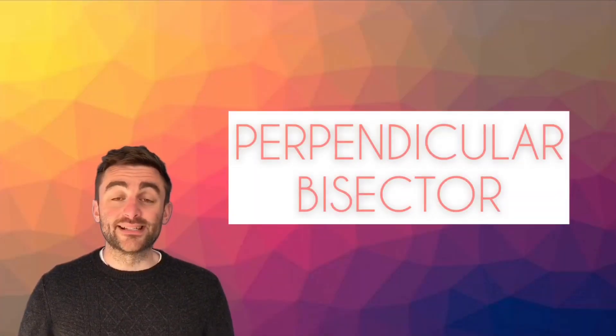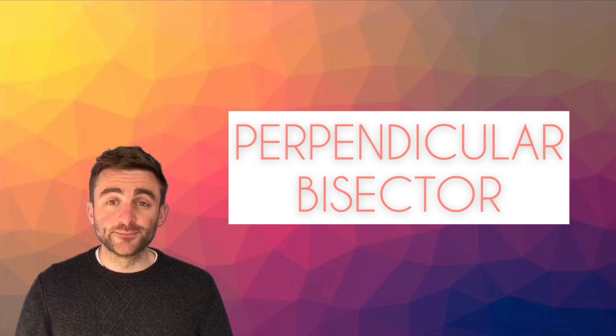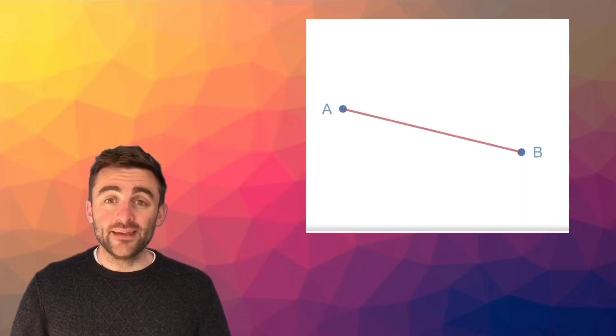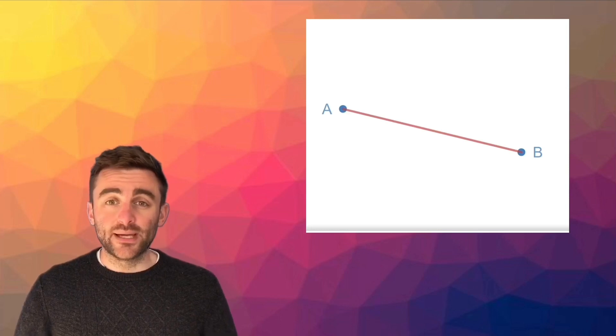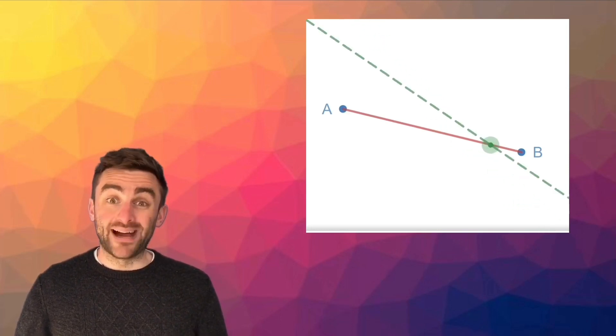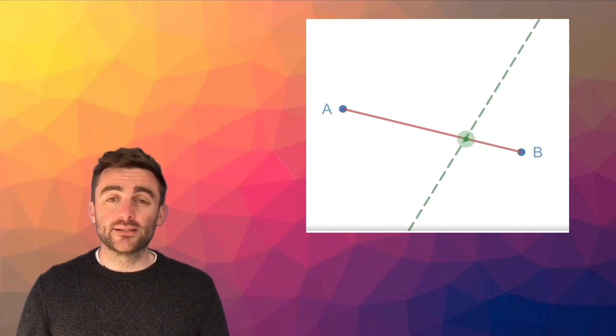A perpendicular bisector does exactly what its name suggests. If we have a line segment AB, then the perpendicular bisector of AB is the line which is perpendicular, which bisects AB. That means it cuts it exactly in half.